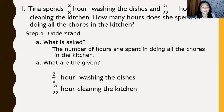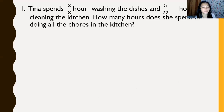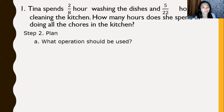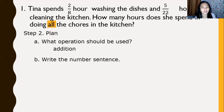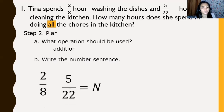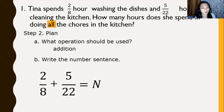Step two: plan. Since we have the given, we should know what operation to use. We look for a word clue — the word clue is 'all,' which means addition. Let us write the number sentence using our given facts: 2/8 plus 5/22 equals n. That is step number two.